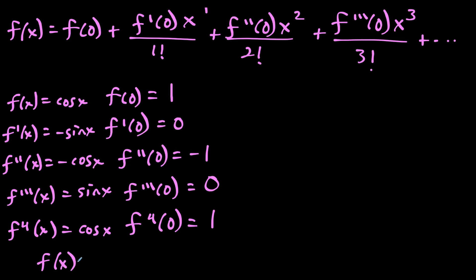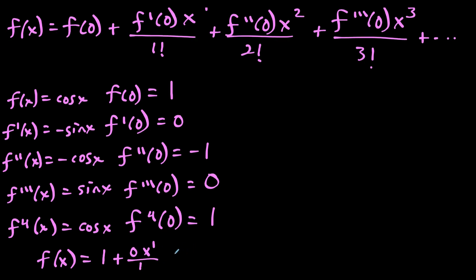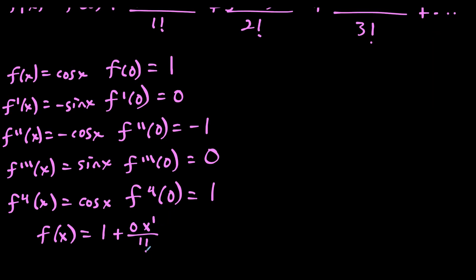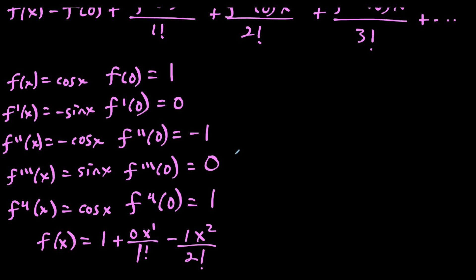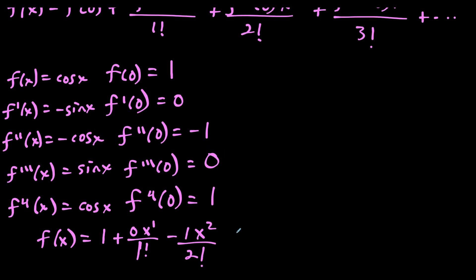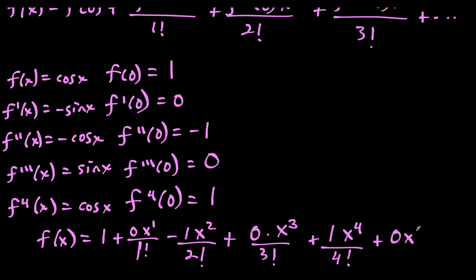So we have f of zero is one. Then f prime of zero is zero times x to the first over one factorial. The next coefficient is negative one, so we have minus one times x squared over two factorial. Then the third derivative at zero is zero times x to the third over three factorial. Then the fourth derivative at zero gives us one times x to the fourth over four factorial, followed by zero times x to the fifth over five factorial. The pattern is one, zero, negative one, zero, one, zero, and so on.